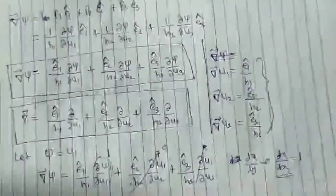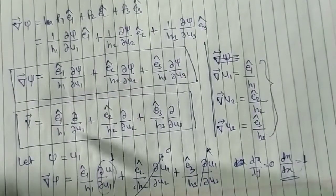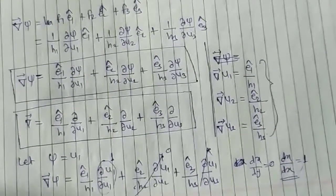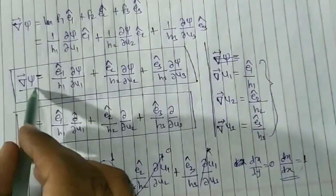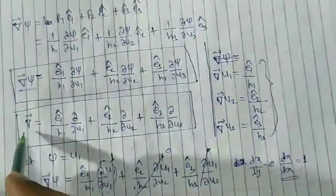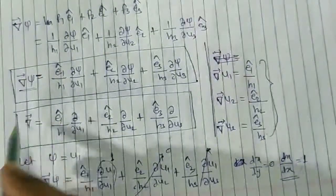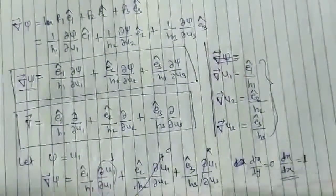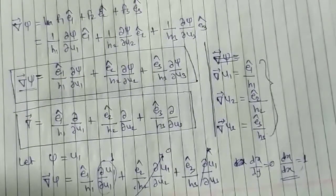Before concluding this lecture, let us review what we obtained. We derived the gradient of ψ, and we obtained the expression for the del operator ∇ in a curvilinear coordinate system. For today, we will stop here.